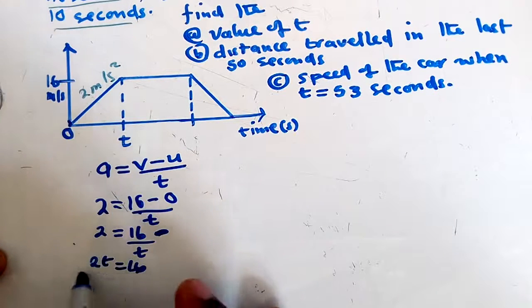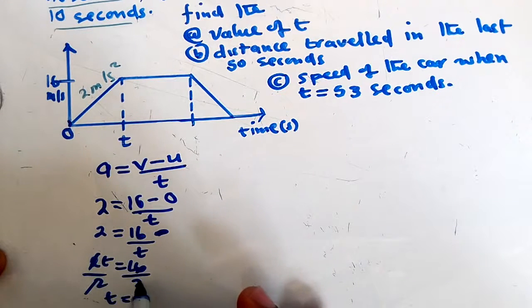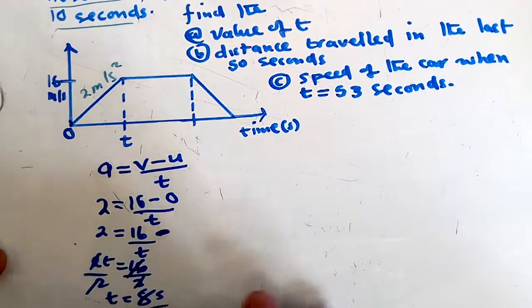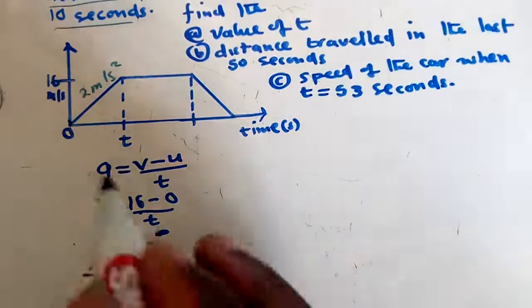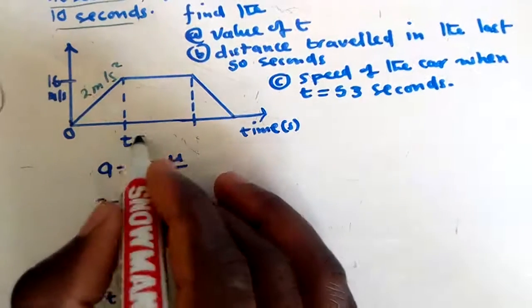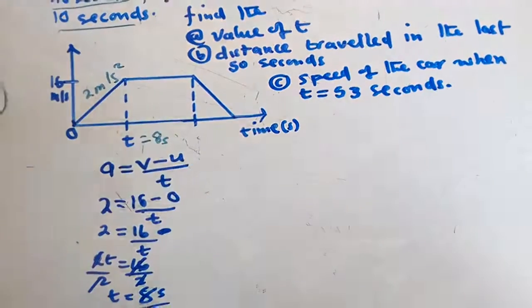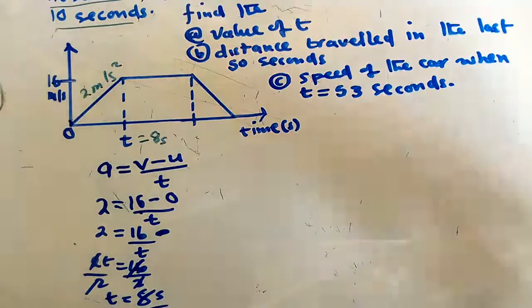Cross-multiplying, we get 2t = 16. Dividing both sides by 2 gives t = 8 seconds. So the value of t is 8 seconds.